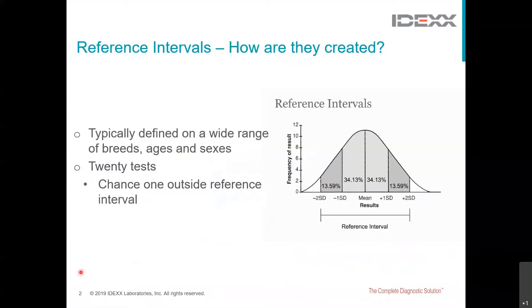Let's start by talking about population-based reference intervals and how they are created. To establish population-based reference intervals, blood is sampled from a large number, defined as ideally a minimum of 120 animals of a particular species using a mixture of breeds, ages, and ideally a relatively even split between the genders. They are deemed to be healthy based on history and physical exam.